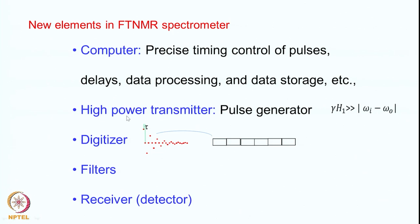An important element is the high power transmitter — the pulse has to have high amplitude. The RF for the pulse has to be very high amplitude because in order for the pulse to excite a whole range of frequencies, the effective field must be along the H1 field, which is the RF amplitude. The amplitude has to be much greater than the entire spectral range omega_i minus omega_0, where omega_0 is the RF frequency and omega_i is the frequency of a particular signal. For the whole range of i's this condition must be satisfied so the effective field is along H1, allowing you to rotate the entire magnetization about the axis of the RF. This requires very high power.